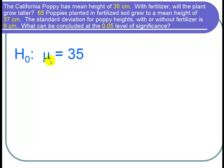For H1, we want to find out if the poppies will grow higher in fertilized soil. So H1 is μ is greater than 35.